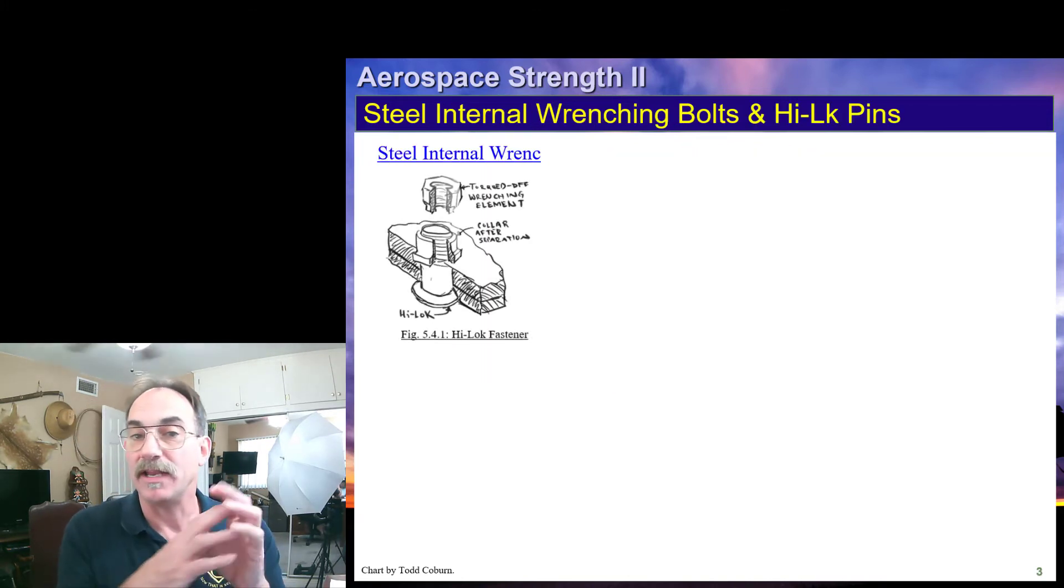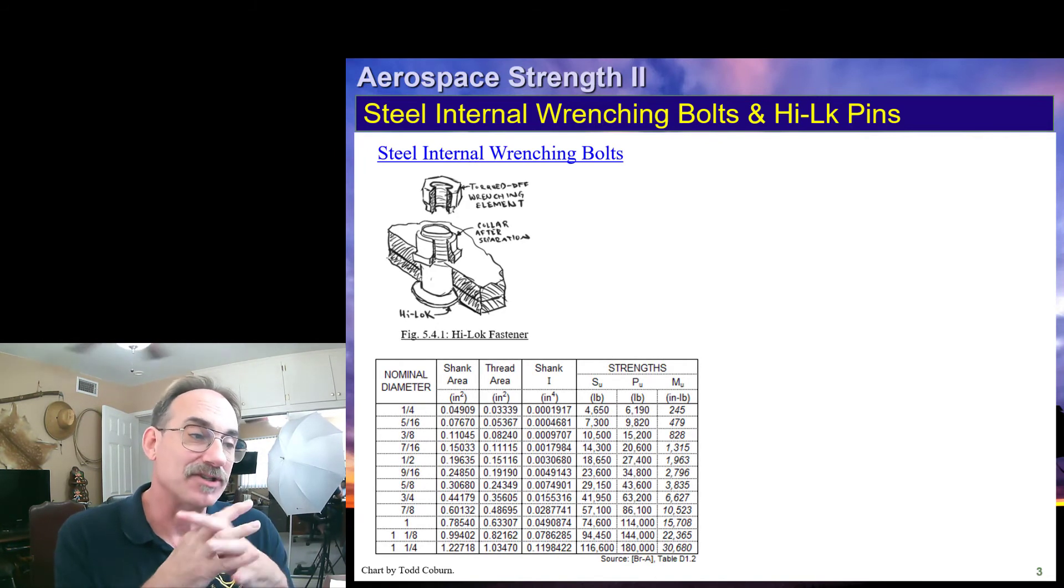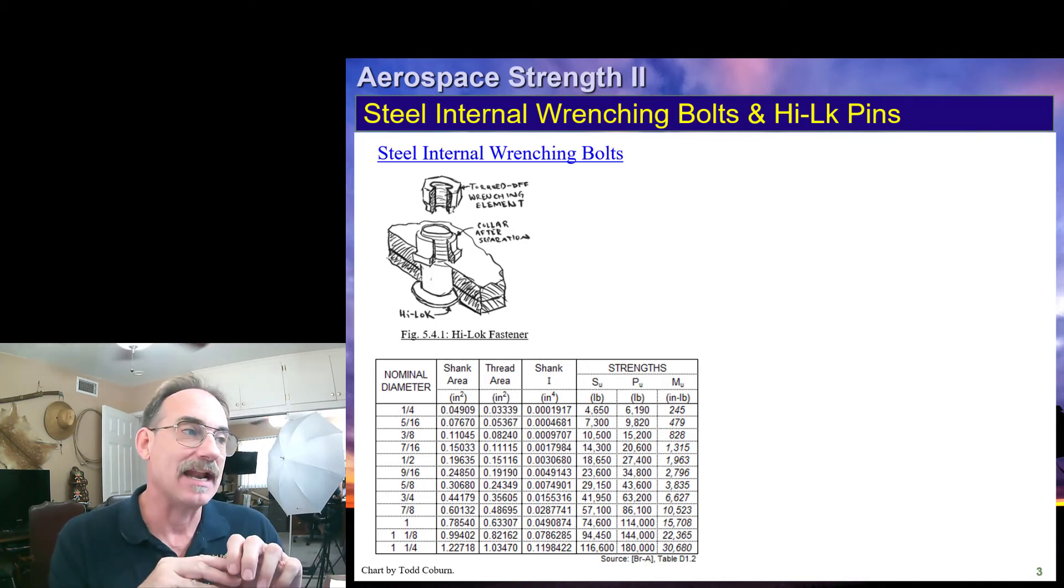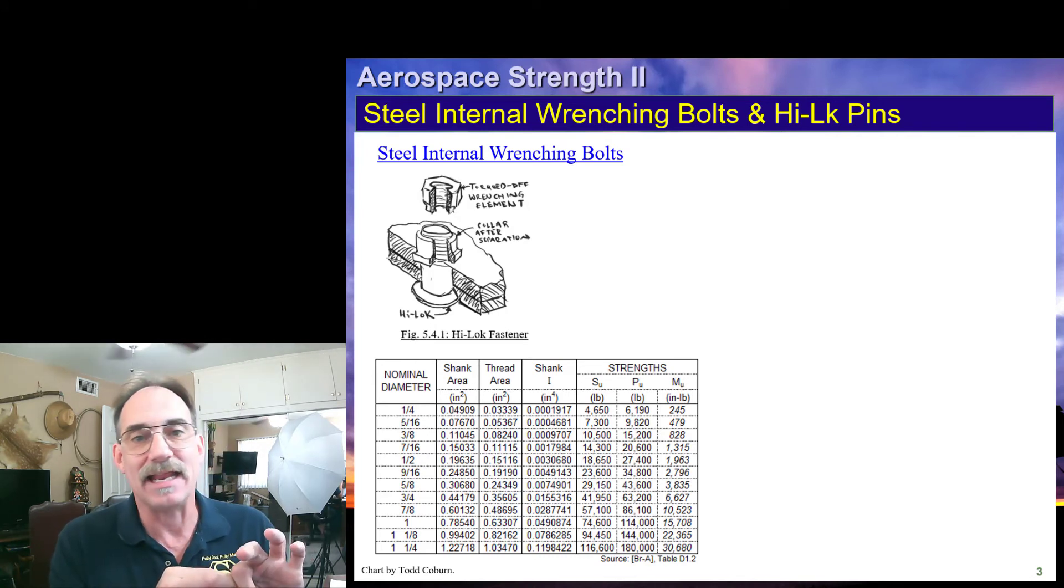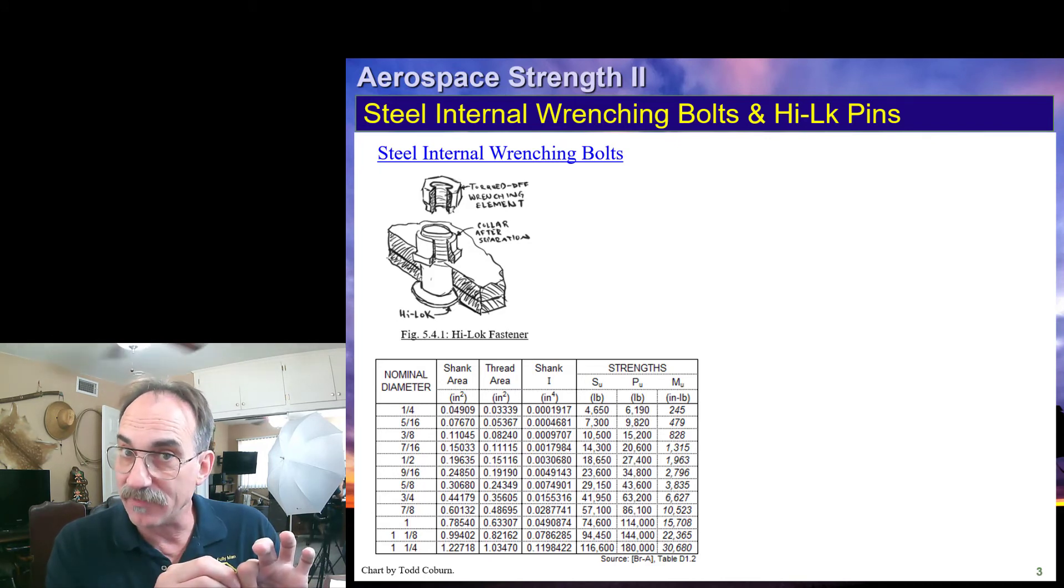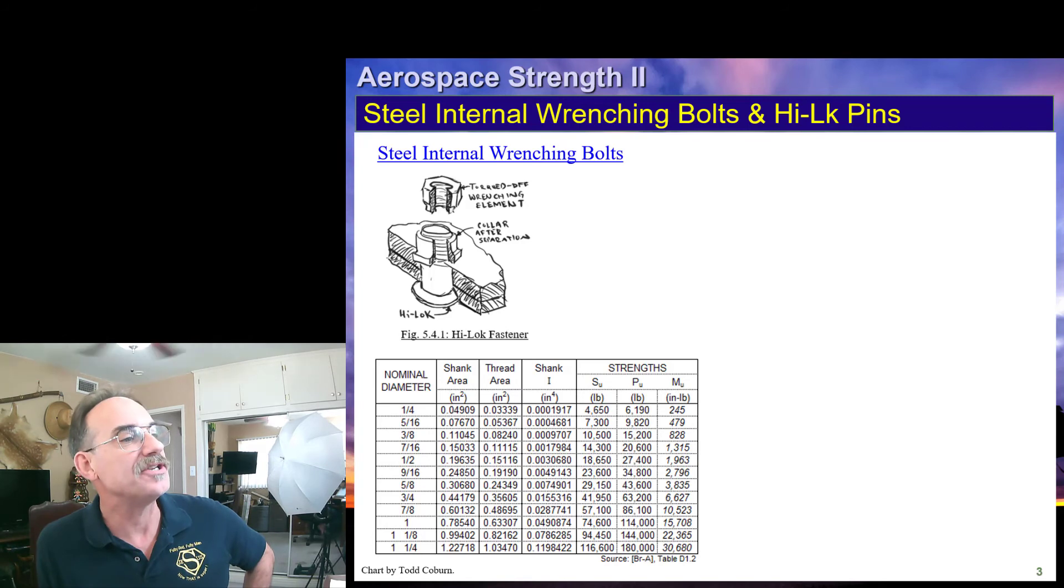The next kind of bolt we might run into is an internal wrenching bolt. High locks are a perfect example, where you have a feature on the nut that's used to tighten that and also permanently locks that in place, has a locking feature in that nut, end of the nut that breaks off. These are the allowables, and these are analyzed the same way as AN bolts.